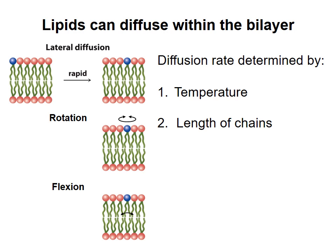Third, as the number of double bonds in the hydrocarbon tails increases, the rate of diffusion also increases. Remember that double bonds cause kinks in the hydrocarbon chains, so chains that have double bonds can't pack as efficiently together and will experience less friction as they slide past each other.